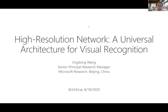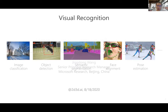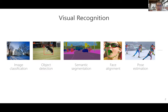Thanks, Peter, for the invitation. It's my honor to be here to present my work. My talk is about the High Resolution Network and a universal architecture for visual recognition. In computer vision, visual recognition is a very important area. Examples include image classification, object detection, semantic segmentation, face alignment, and pose estimation.